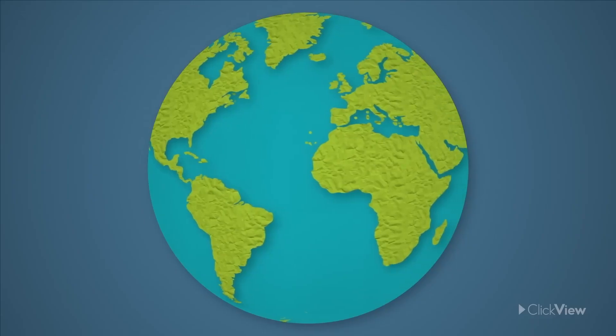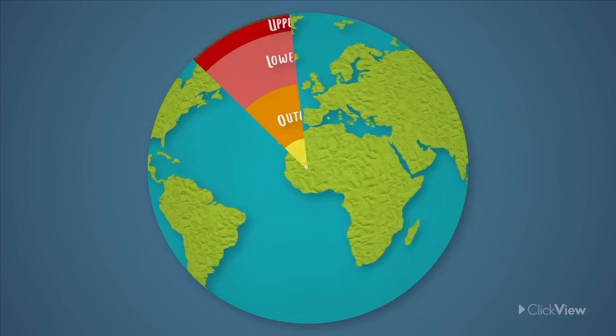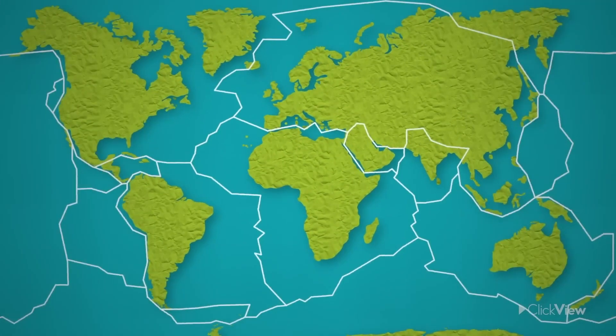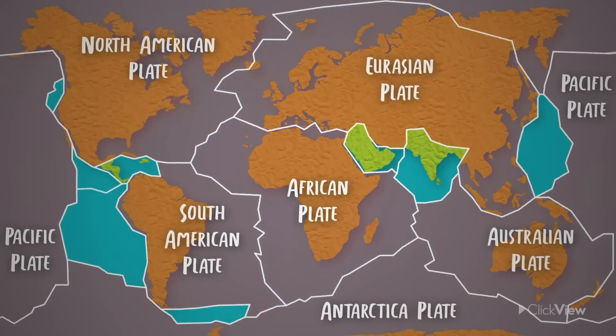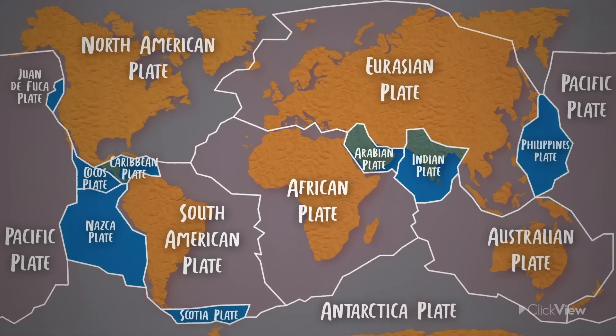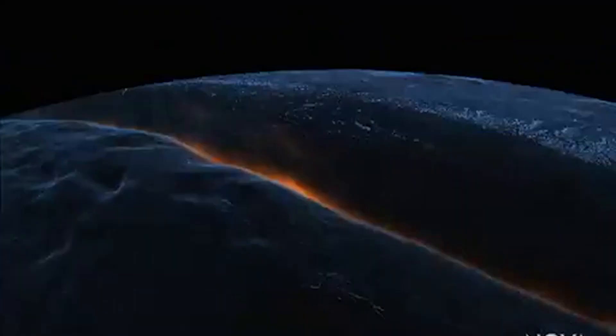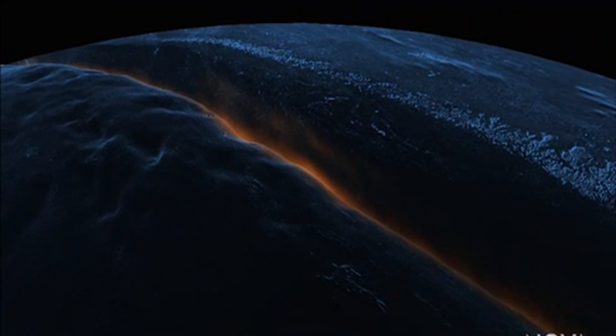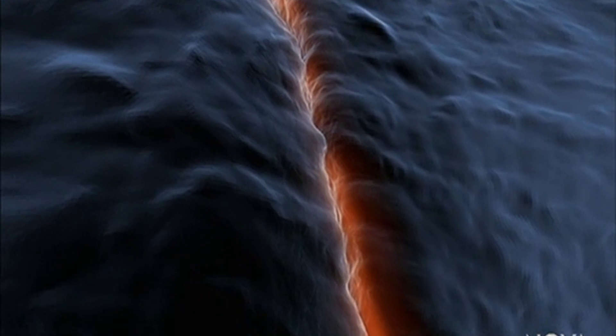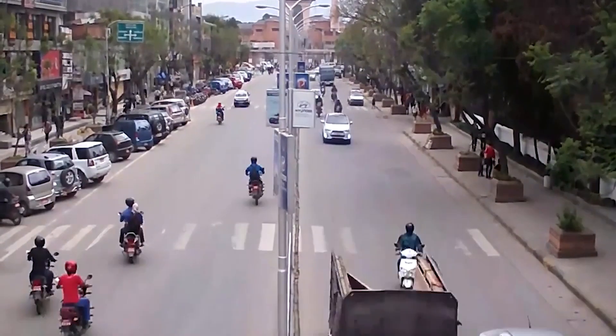But what exactly causes this energy to be released? The Earth's outer layer, or crust, is made up of several large plates that interact with each other and move in slow, gradual ways. When two plates grind against each other, they can create a buildup of pressure and energy. If this pressure becomes too great, it can cause the plates to suddenly shift, releasing the stored energy and creating seismic waves. These seismic waves travel through the Earth's crust and cause the ground to shake, leading to an earthquake.